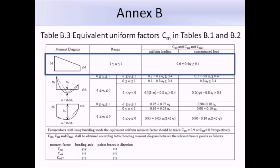Here's table B.3, and we are dealing with major axis bending moments of 50 kNm at each end, which causes constant bending moment along its length. Psi is equal to 1, and we can use the equation 0.6 plus 0.4 psi, which must be greater than or equal to 0.4, to work out CMY.